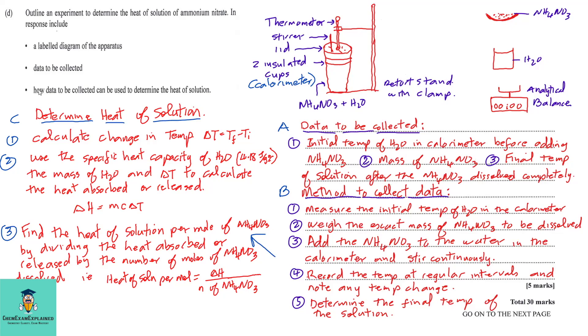For the part that we need to look at how the data to be collected can be used to determine the heat of solution, we must first look at measuring the initial temperature of water in the calorimeter. We need to weigh the exact mass of ammonium nitrate to be dissolved. We then will add the ammonium nitrate to the water in the calorimeter and stir continuously. We would then record the temperature at regular intervals and note any temperature change. We will then determine the final temperature of the solution.